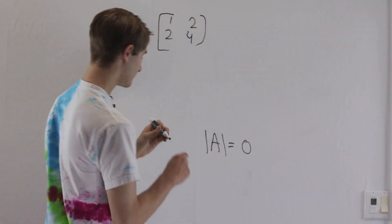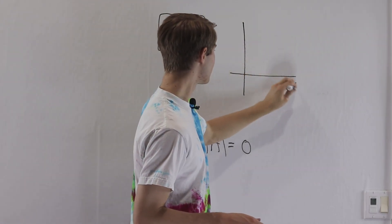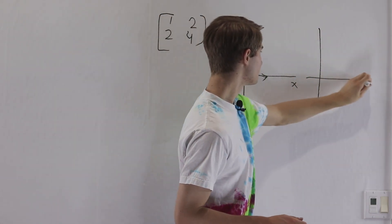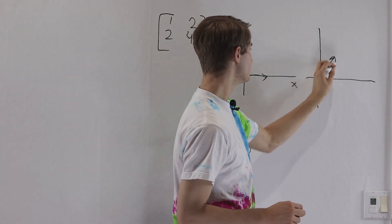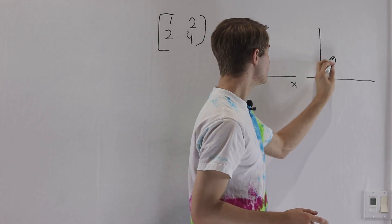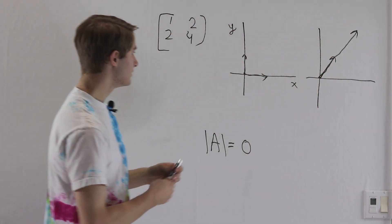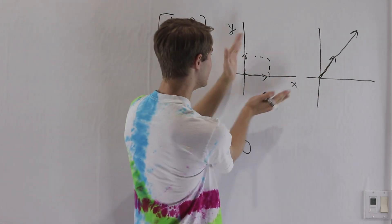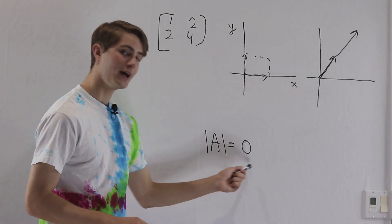Consider the matrix [[1,2],[2,4]]. The question is: what transformation is this matrix describing? If we take a look at our XY plane, starting with our two vectors (1,0) and (0,1), after we apply this transformation, the vector (1,0) is going to get moved to the first column vector (1,2), and the vector (0,1) is going to get moved to the second column (2,4). Notice that these two vectors are both along the same line. What that means is that this square is going to get squished down onto a line, and therefore it's not going to have any area — and therefore the determinant is zero.